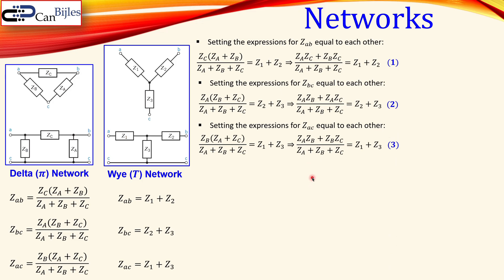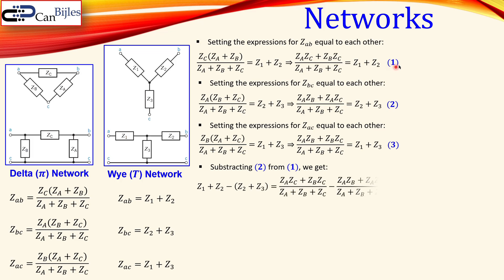Now we subtract equation 2 from equation 1. The denominators are identical, so we work with the numerators. The Z2 terms cancel each other out, leaving Z1 minus Z3 on the left side. After simplification, we get equation 4, which expresses Z1 minus Z3 in terms of the delta impedances.